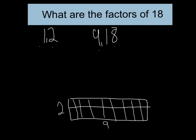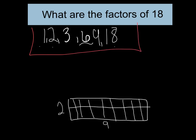Now going to my next counting number, which is 3 — can I multiply anything by 3 to get 18? Yes, I can: 3 times 6 equals 18. Going to my next counting number, 4 — can I multiply anything times 4 to get 18? No. What about 5? Still no. And now I have 6 here — remember, that's already part of my list of factors, 6 times 3. Then 7? No. So once I start saying no, I know I'm pretty much done. My factors of 18 are: 1 times 18 equals 18, 2 times 9 equals 18, and 3 times 6 equals 18.